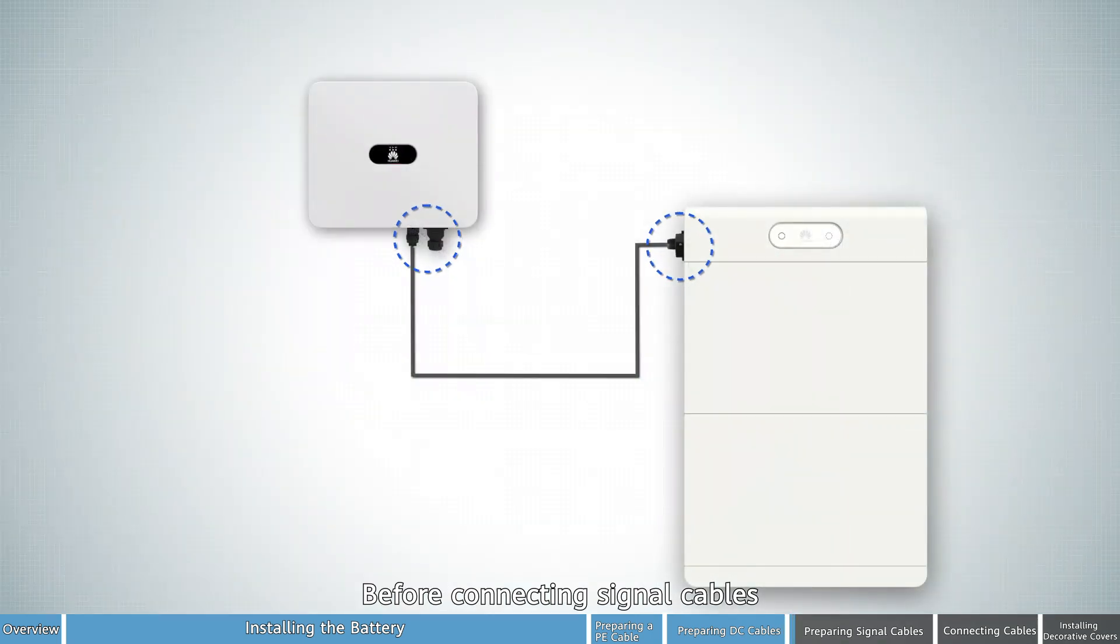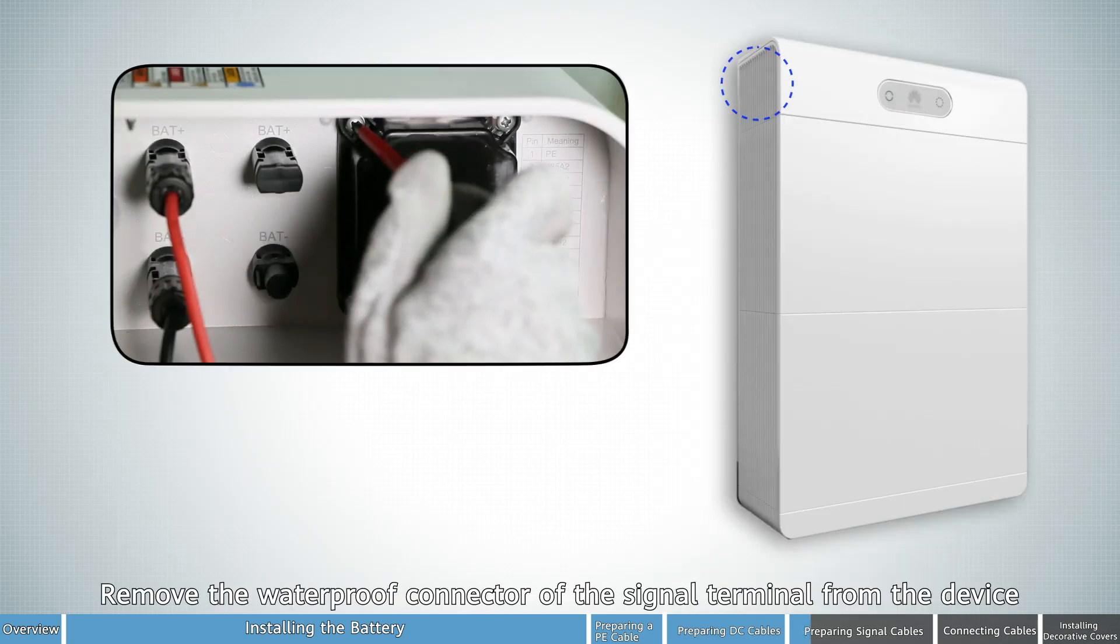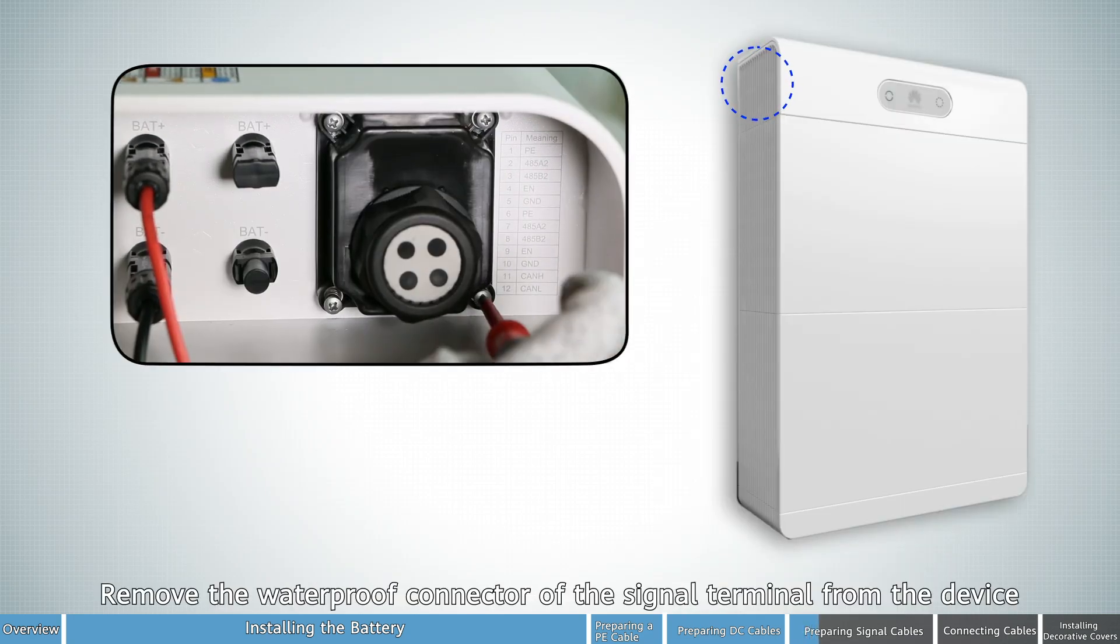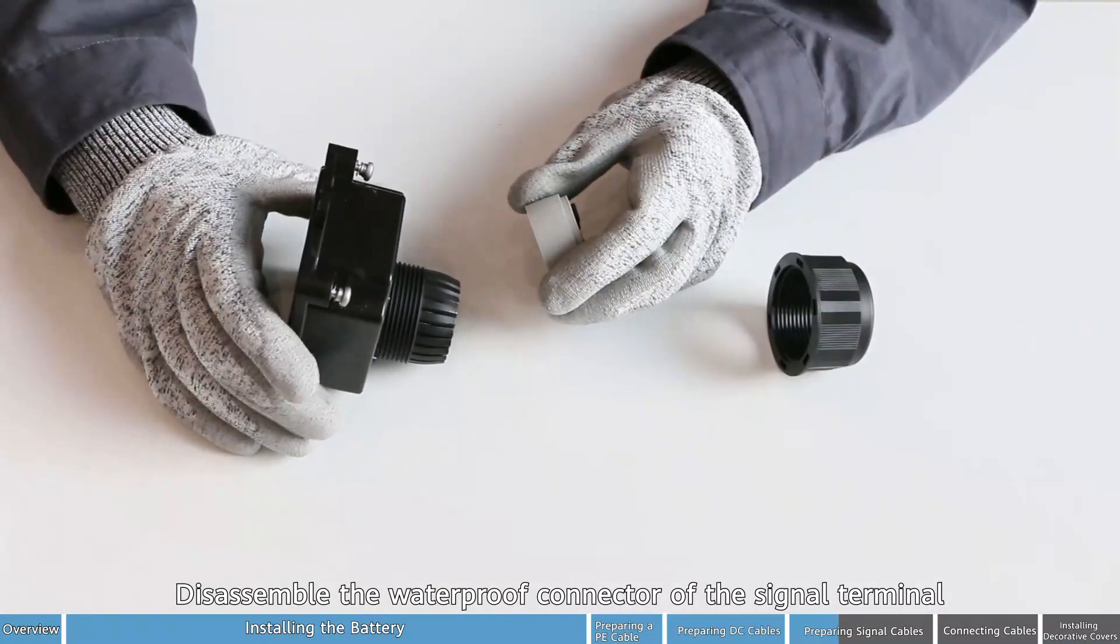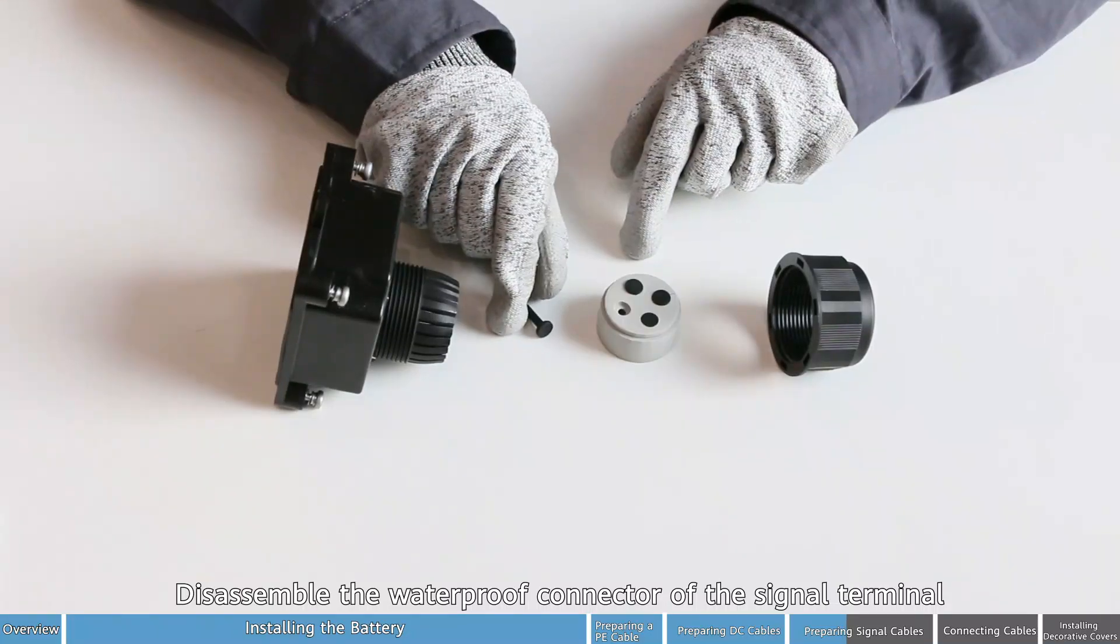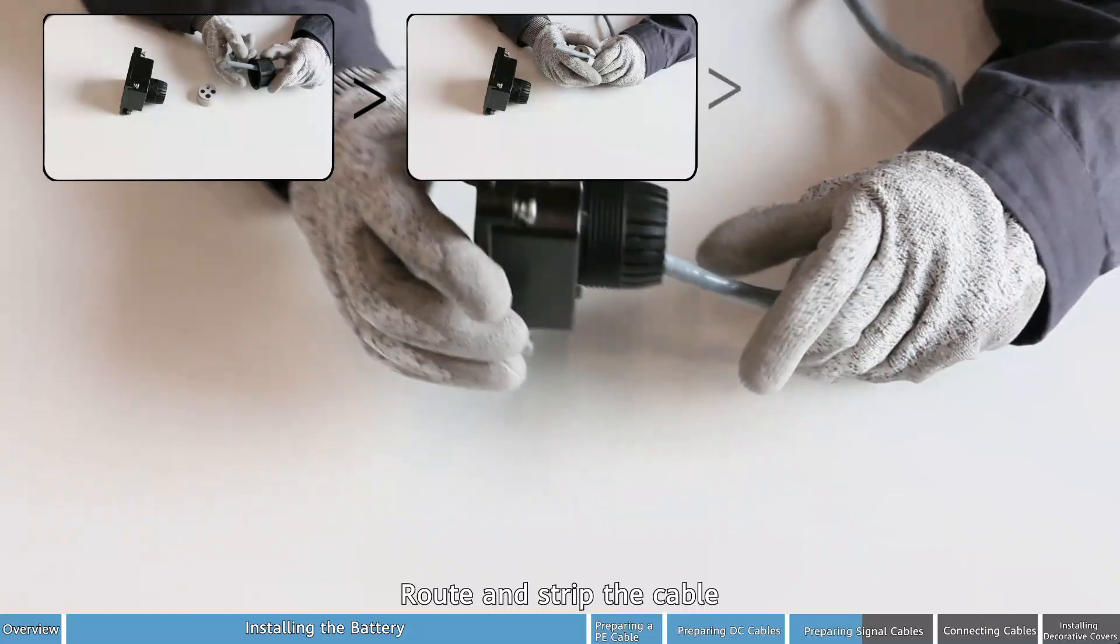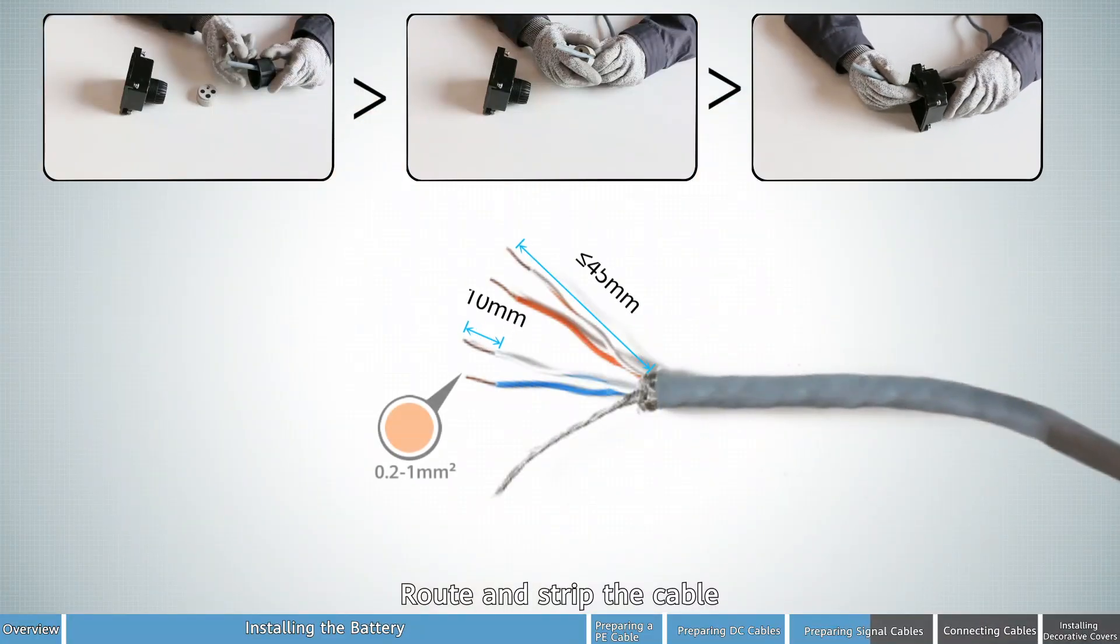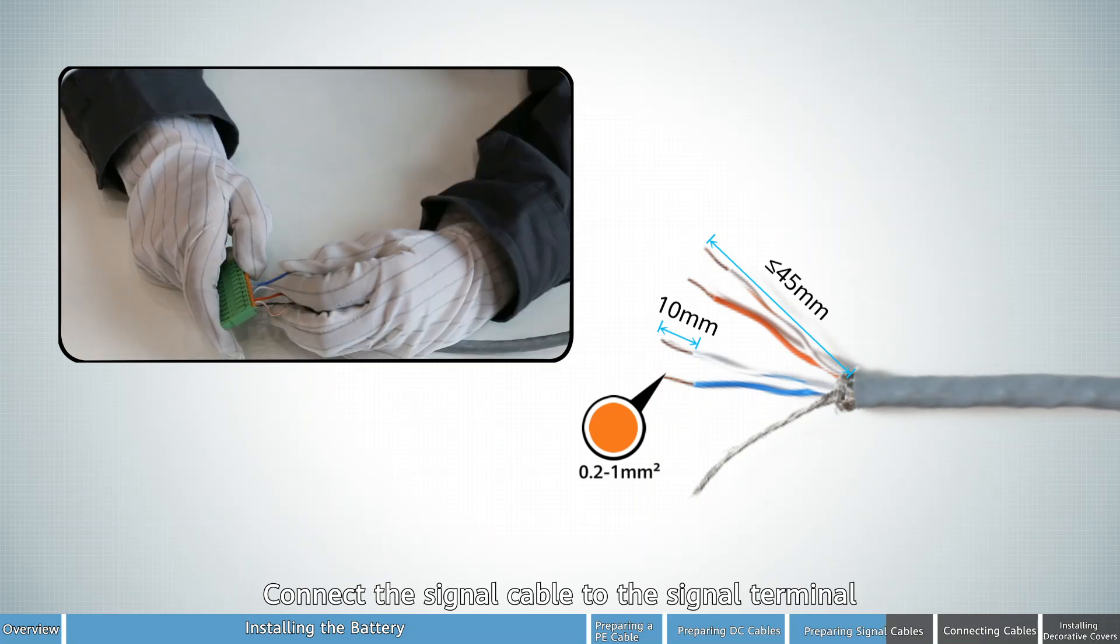Before connecting signal cables, let's see how to prepare the signal terminal. Remove the waterproof connector of the signal terminal from the device. Disassemble the waterproof connector of the signal terminal. Route and strip the cable. Connect the signal cable to the signal terminal.